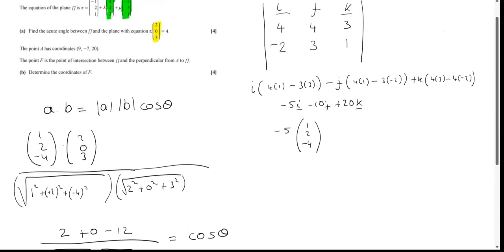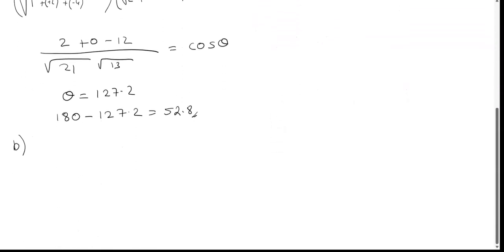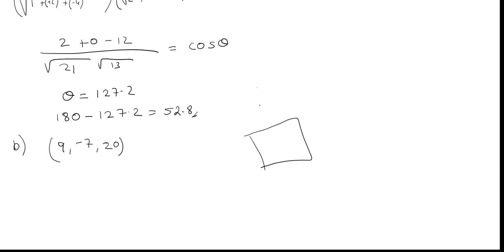Now part b. Point A has coordinates (9, −7, 20), and point F is the intersection between plane π and the perpendicular from A to π. We need to determine the coordinates of F. So we have our plane, our point A, and the line going perpendicular to the plane — we need to find where that line intersects the plane, and that intersection point is F.